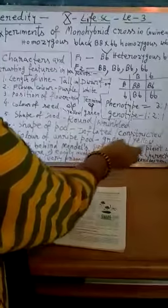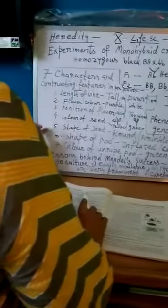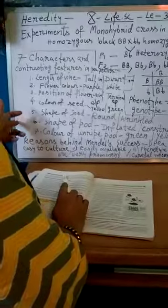This is green and yellow. So these are the 7 characters in pea plants which Mendel has chosen.